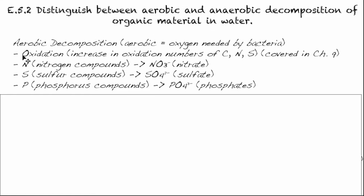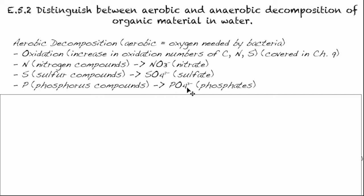Aerobic decomposition we can call oxidation — in other words, it's reacting with oxygen. That results in an increase in the oxidation numbers of carbon, nitrogen, or sulfur, depending on what the incoming organic material was made of, and that's covered more in Chapter 9. Nitrogen compounds will be converted into nitrates, sulfur compounds into sulfates, and phosphorus compounds into phosphates.